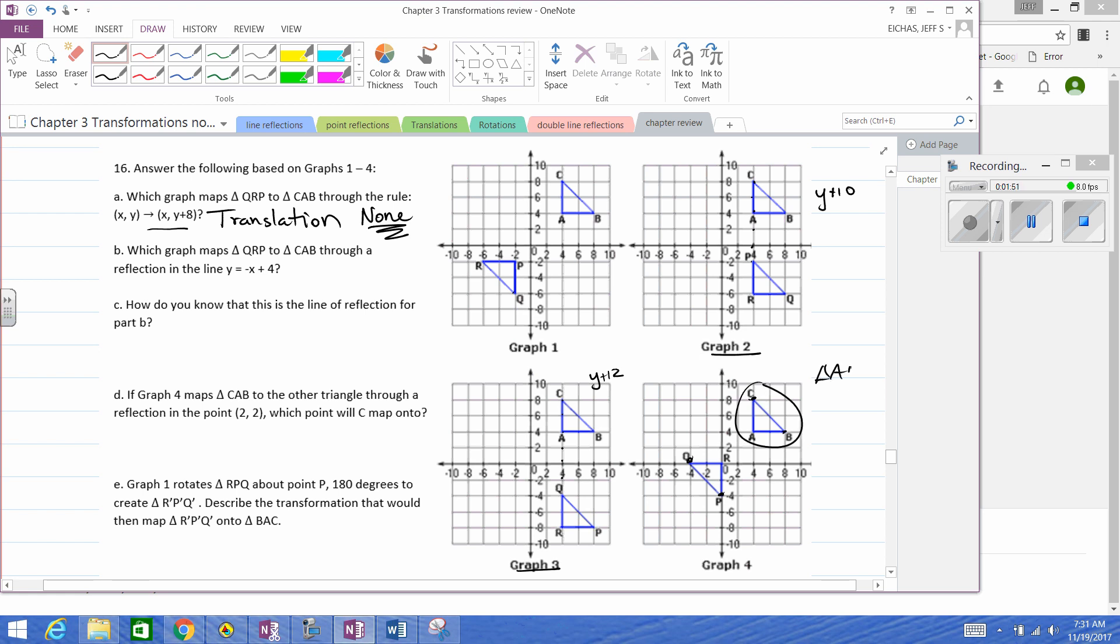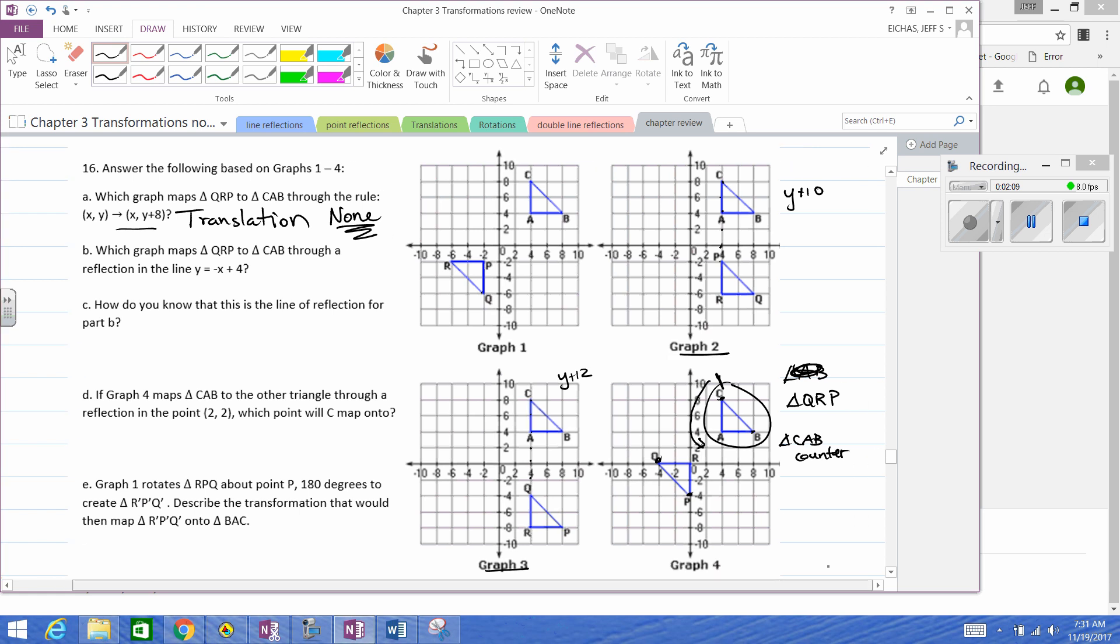Check this out: if we go triangle QRP, start at C, go to A, and then B. That one's got a counterclockwise direction, right? And if we go Q to R to P, that is clockwise, so that is a rotation. Orientation didn't get preserved.